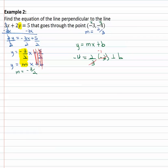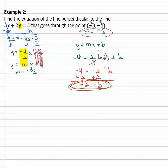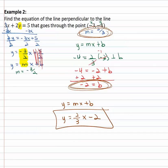Y is negative 4, equals m two thirds times x which is negative 3, plus b. The 3 divides into negative 3 leaving negative 1, giving us negative 4 equals 2 times negative 1, which is negative 2, plus b. Add 2 to both sides and we get negative 2 equals b. Using the correct slope and b, we plug into y equals mx plus b to get y equals 2 thirds x minus 2. This is the equation of the line perpendicular to 3x plus 2y equals 5 that goes through the point negative 3, negative 4.